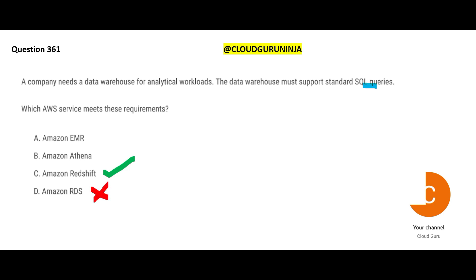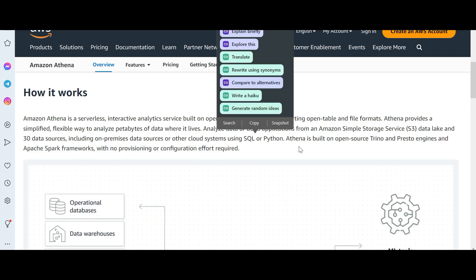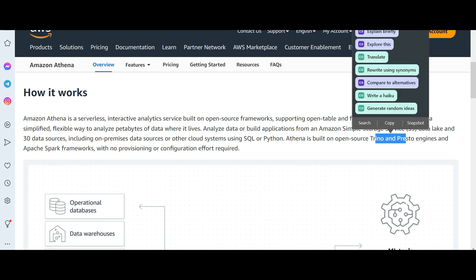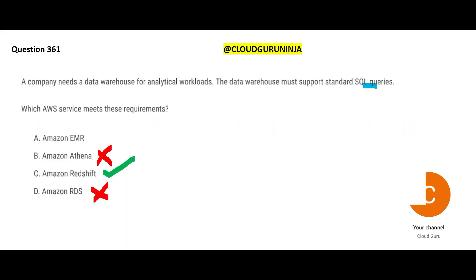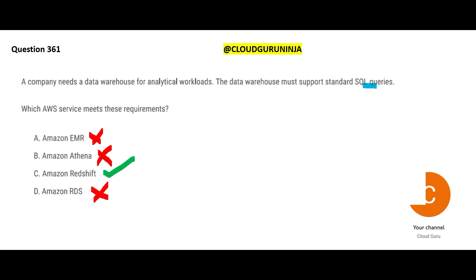Athena lets you analyze large amounts of data with ease and flexibility — it supports SQL as well as Python, and is based on open-source Trino and Presto engines, but it is not a database or a data warehouse. EMR is about big data — you can run and scale Apache Spark, Hive, and other big data workloads. Our question is about data warehouse, not big data, so EMR is not the answer. Redshift is the final answer.